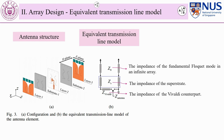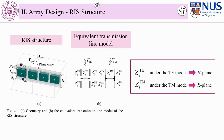The whole analysis of the antenna is based on the equivalent transmission line model. In this antenna element model, Zs is the impedance of the superstrate, so we look into it in detail. With this equivalent transmission line model, Zs is extracted.